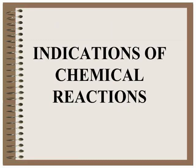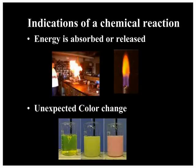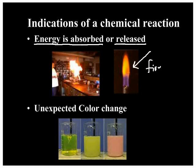There are four basic indications of chemical reactions — there are others, but these are four that I absolutely expect you to get right. You'll do several labs to help develop this skill. The first is that energy in a fairly large amount is either absorbed or released. If you see fire, that is energy being released — that is definitely a chemical change. Heat and light are sources of energy, and if they are produced, that is a sign of a chemical change.